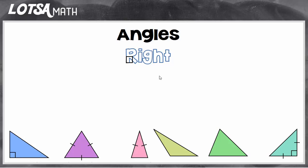Sometimes there's not a right angle in the triangle. Another way to classify them is as an obtuse triangle. You look at your shape and see if you can find an obtuse angle. As soon as you find an obtuse angle, you know it's an obtuse triangle. If you ever see an obtuse angle inside a triangle, then it's an obtuse triangle.